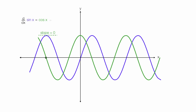So everywhere the slope of the tangent line is zero or horizontal, cosine of x is zero. Every peak or valley of the sine wave — which is the blue wave — at that point, cosine of x is zero.